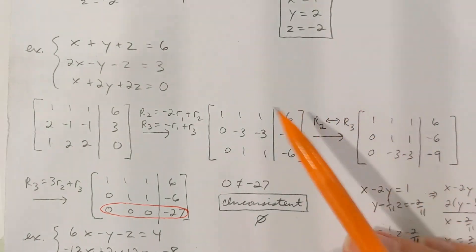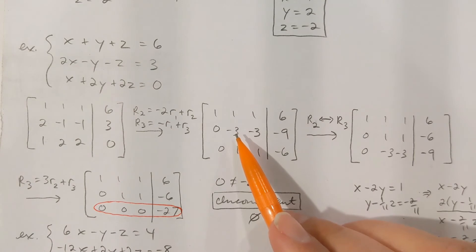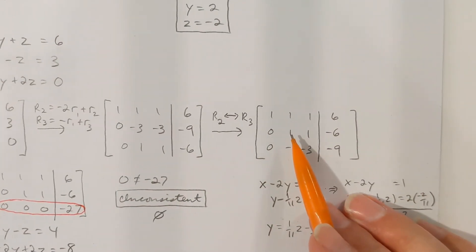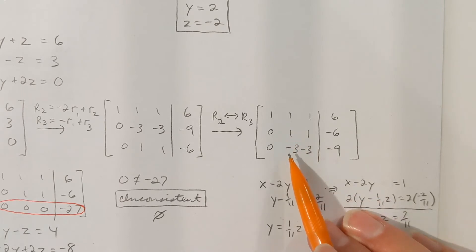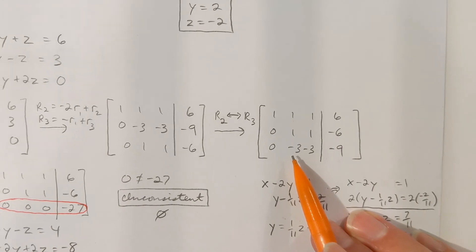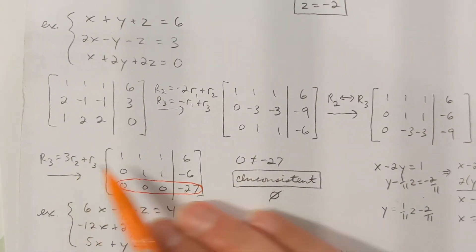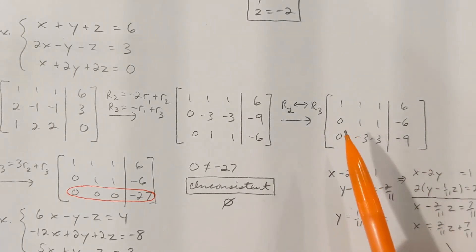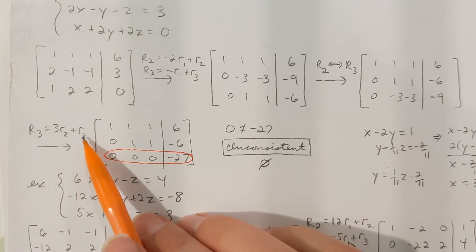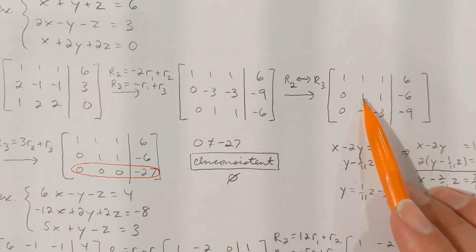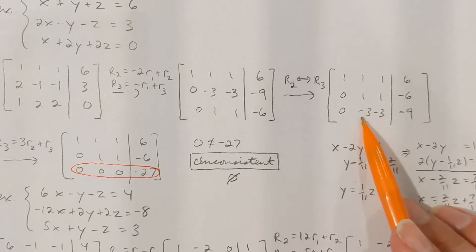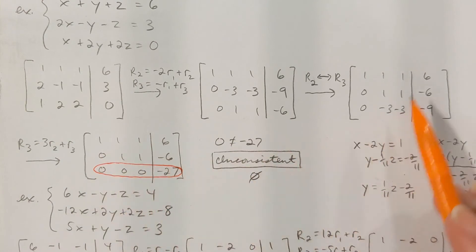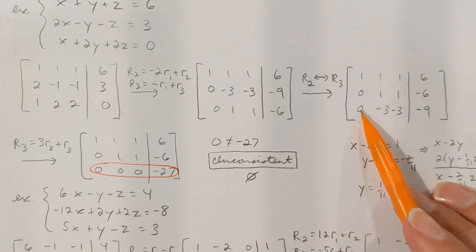The next thing is to get a 1 in the middle of the matrix. If I switch rows 2 and 3, I see a 1 there, so I'll have my 1 in the middle. Right below this 1, I need a 0 — right now it's a negative 3. I need to get a new row 3, but I don't want to disturb column 1. My only option is to work with rows 2 and 3. If I take 3 times row 2 plus row 3, I'll get this negative 3 to become a 0 while keeping the 0 leading off.